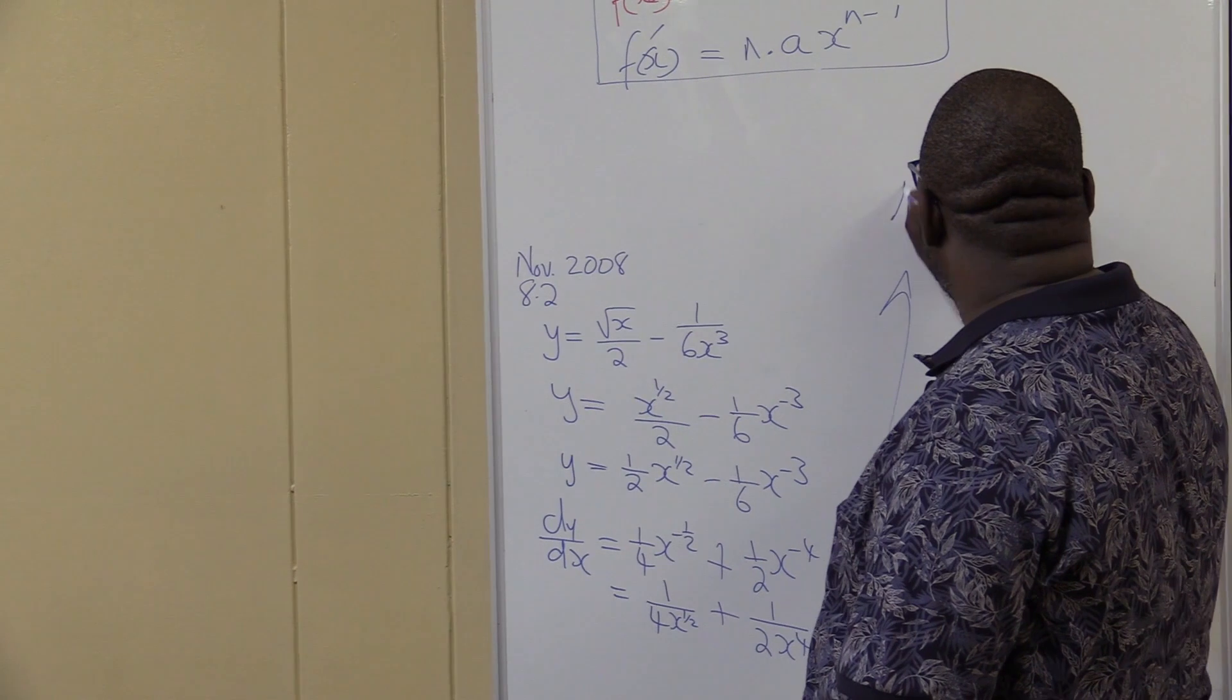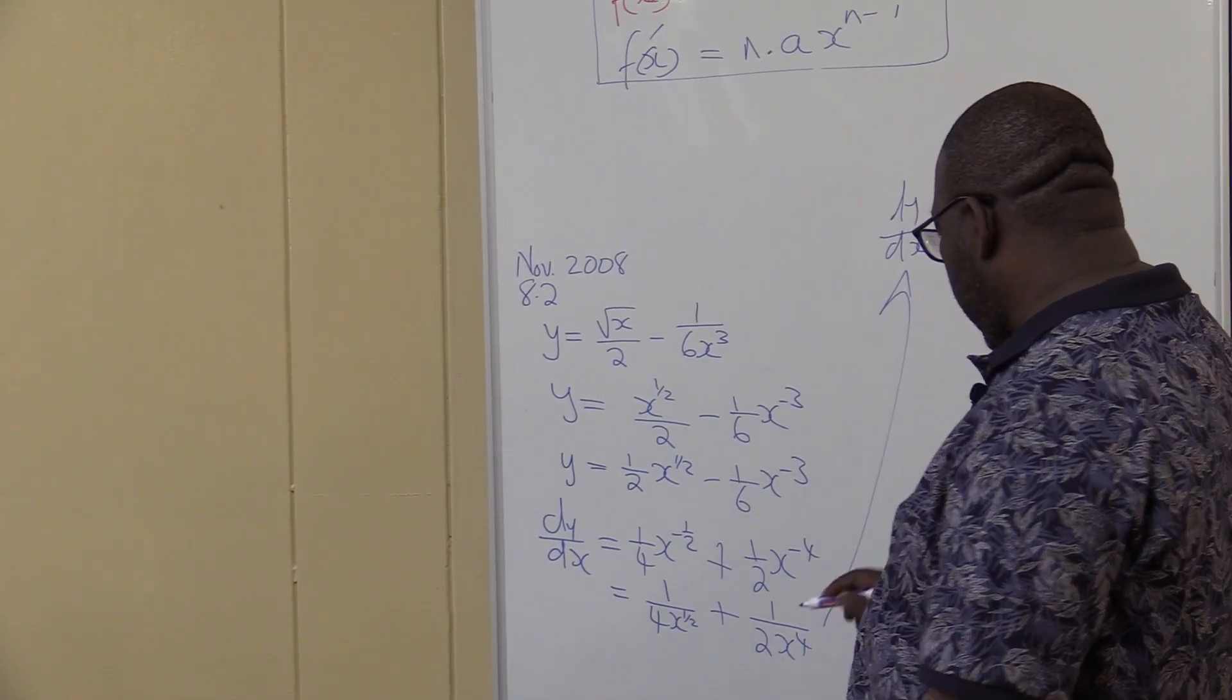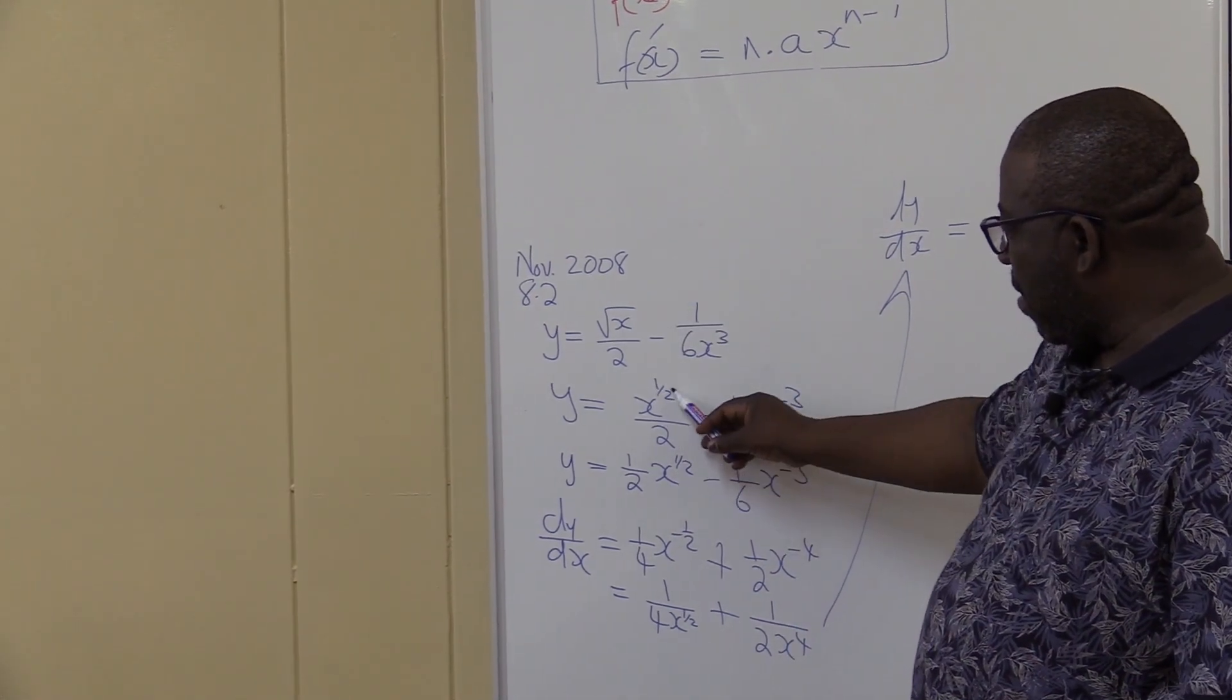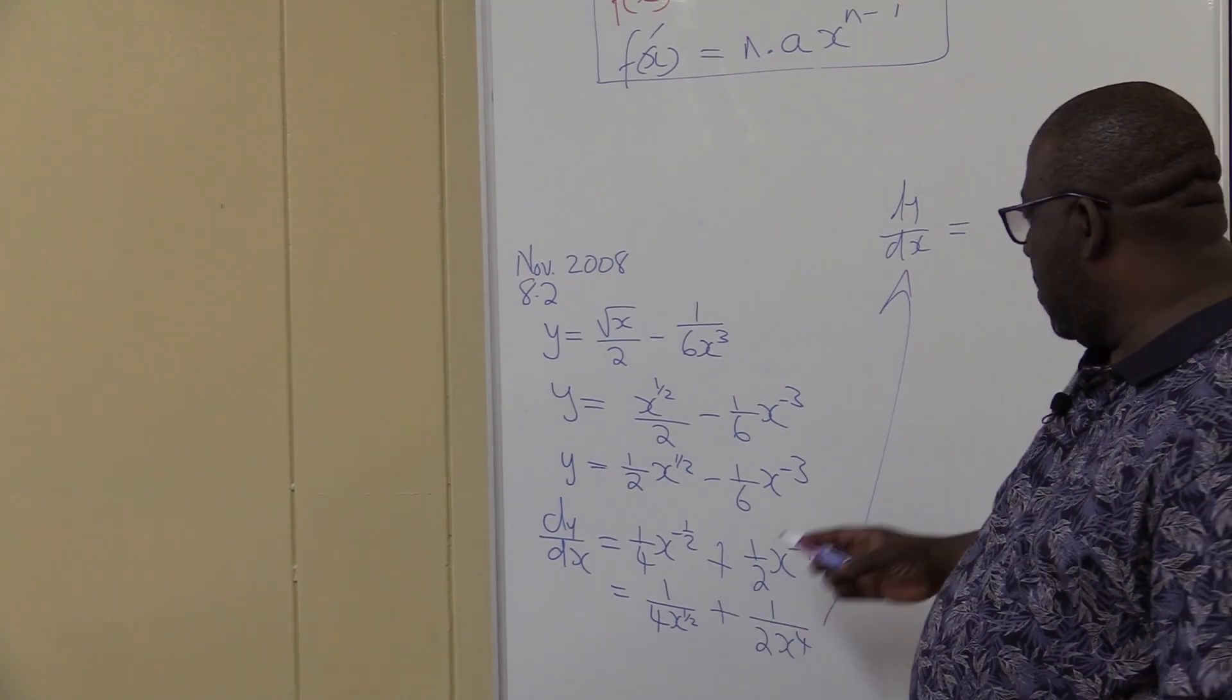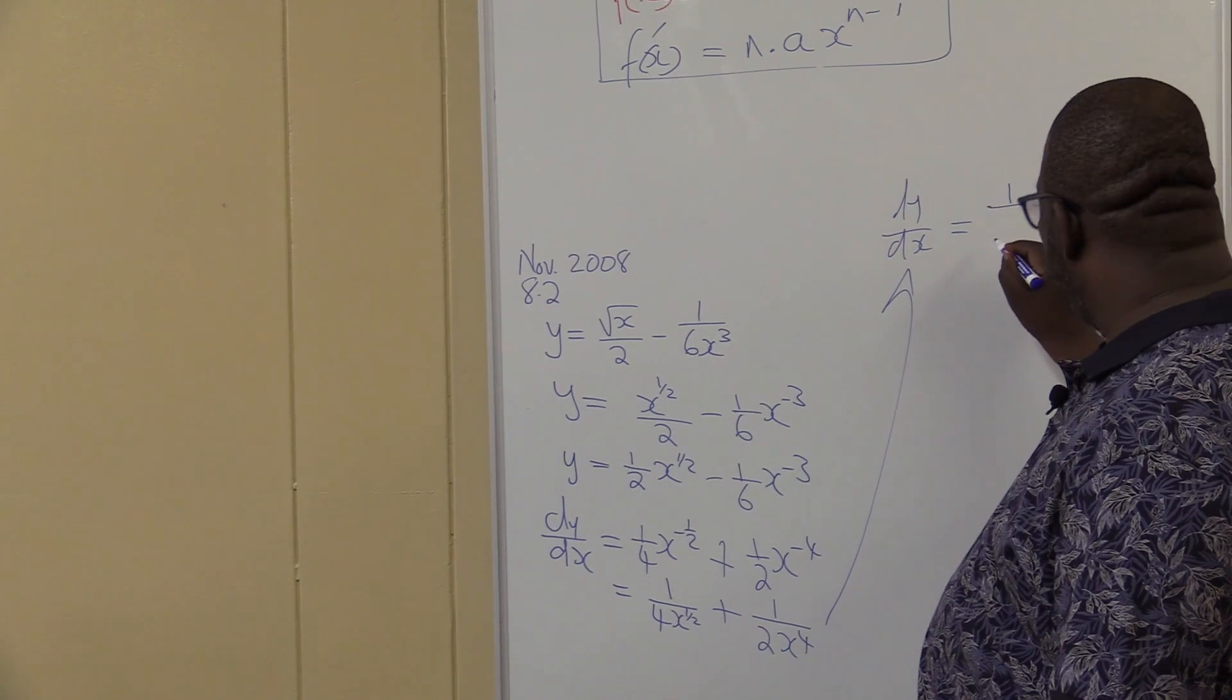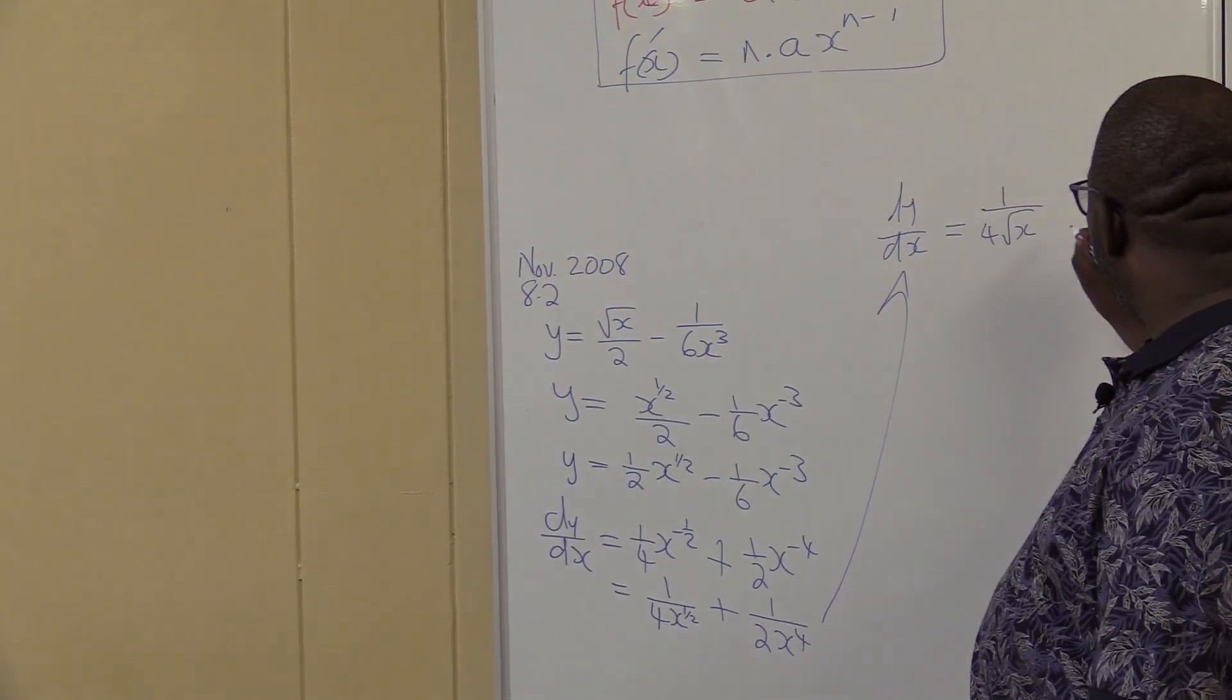Last step. My dy dx will then be equals 2. I want to clean this one. Remember I start this, x to the power half is the same as square root. So I've got x to the power half, it is the square root.